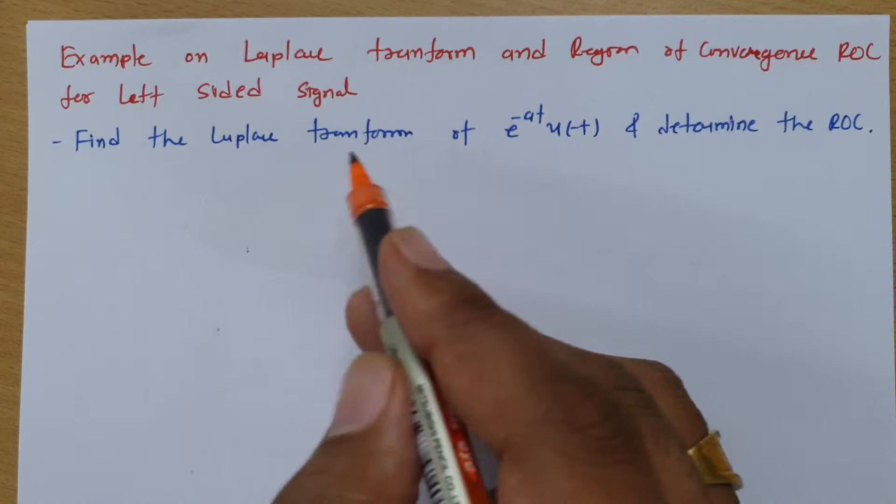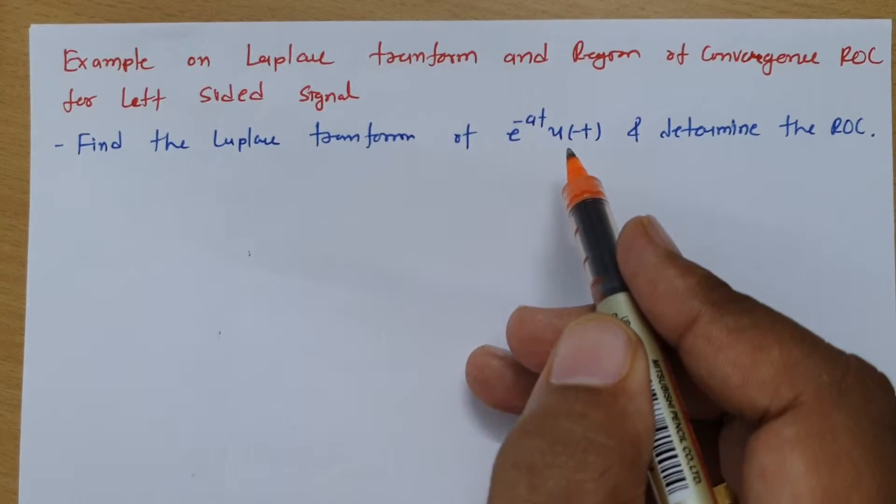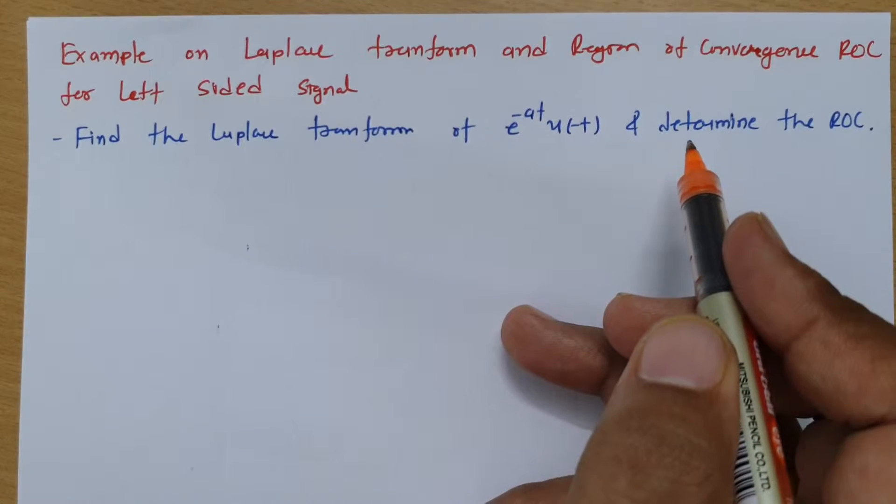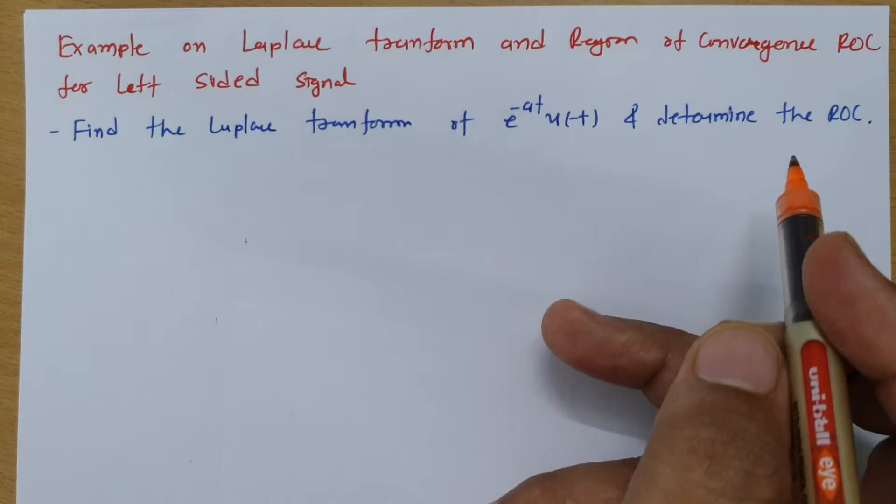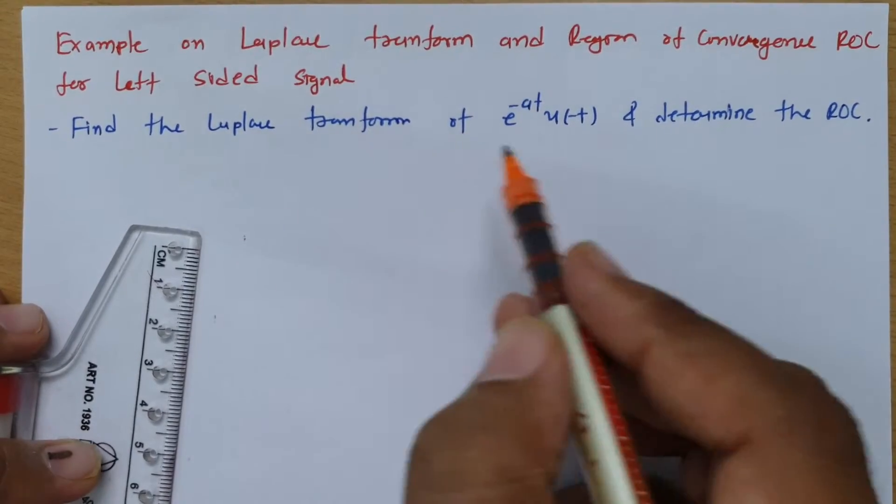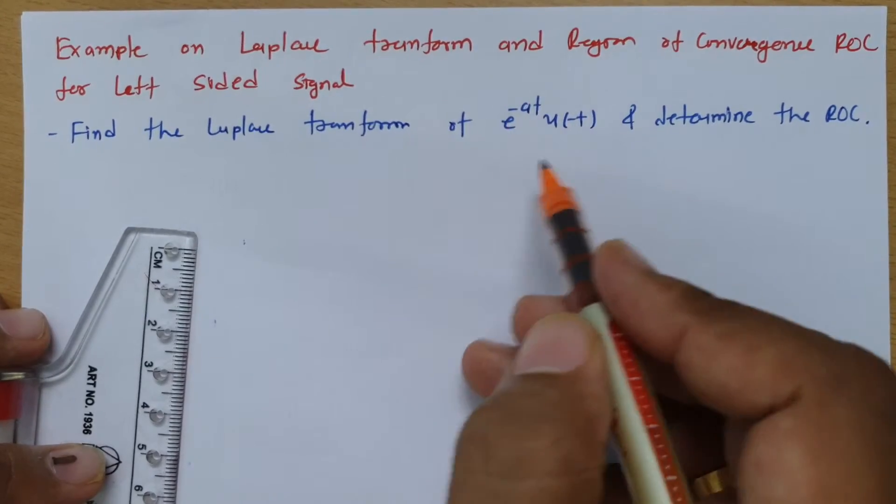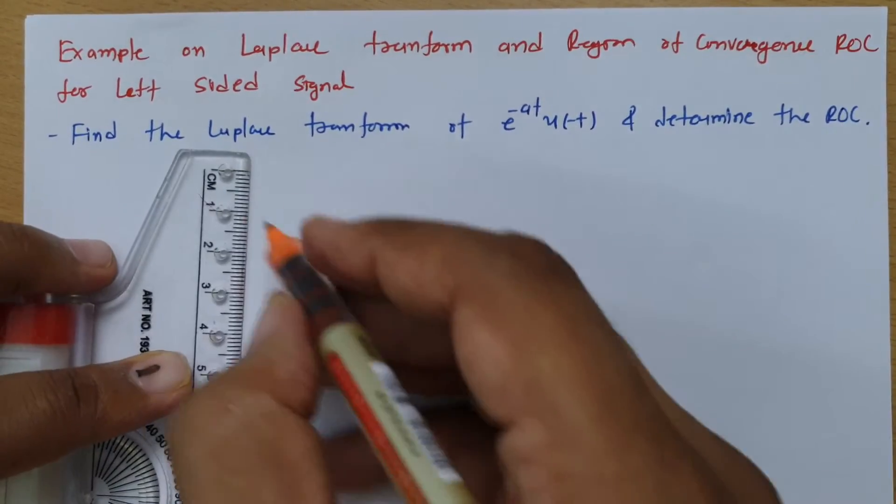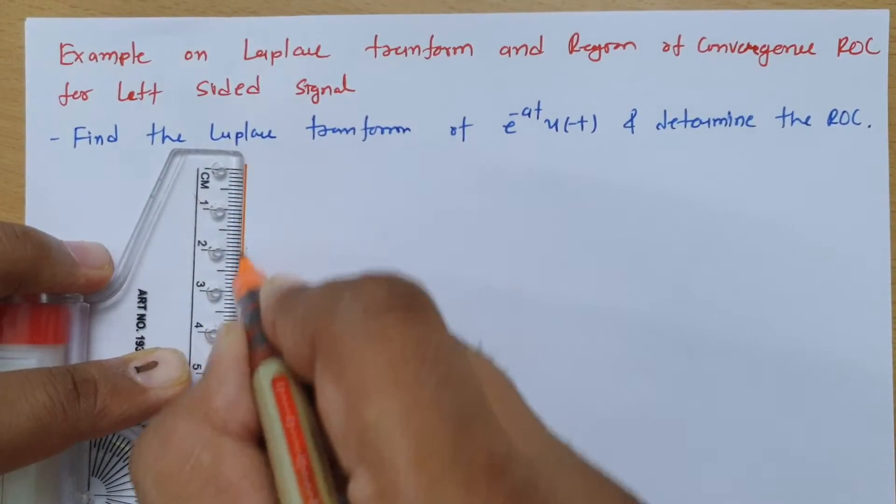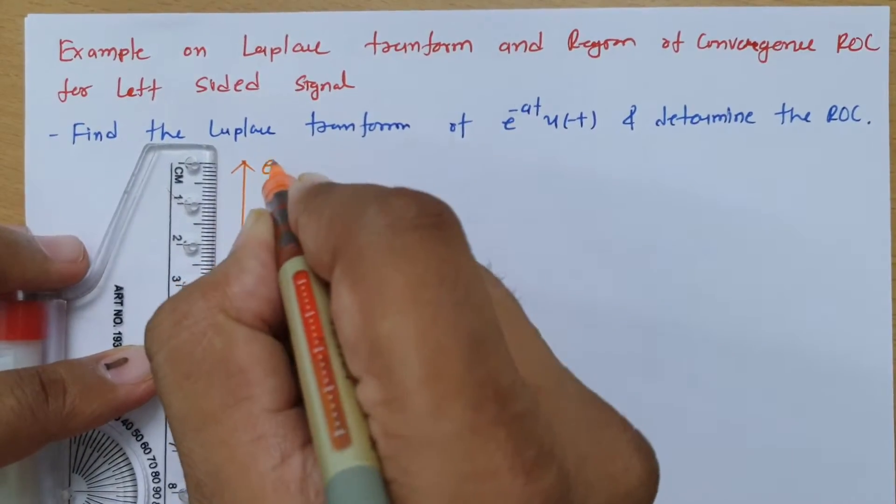The question is find the Laplace transform of e to the power minus at u of minus t and determine the ROC of it. Before I explain how to calculate Laplace transform and ROC, this is a left sided signal and to explain that, I will quickly draw what this signal is first.